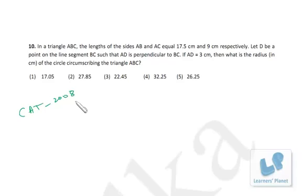Now this problem is from CAT 2008, based on geometry. In a triangle ABC, the lengths of sides AB and AC equal 17.5 cm and 9 cm respectively. Let D be a point on the line segment BC such that AD is perpendicular to BC. If AD is equal to 3 cm, then what is the radius of the circle circumscribing the triangle ABC?